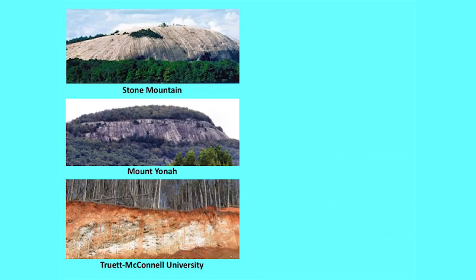If you look at the rocks underneath our feet, we go down to Stone Mountain — that large granitic pluton they carved onto — and we've got Mount Yonah up the road, which is another granitic pluton. This is once-molten rock that rose up in the midst of other rocks; the other rocks have since decayed away.